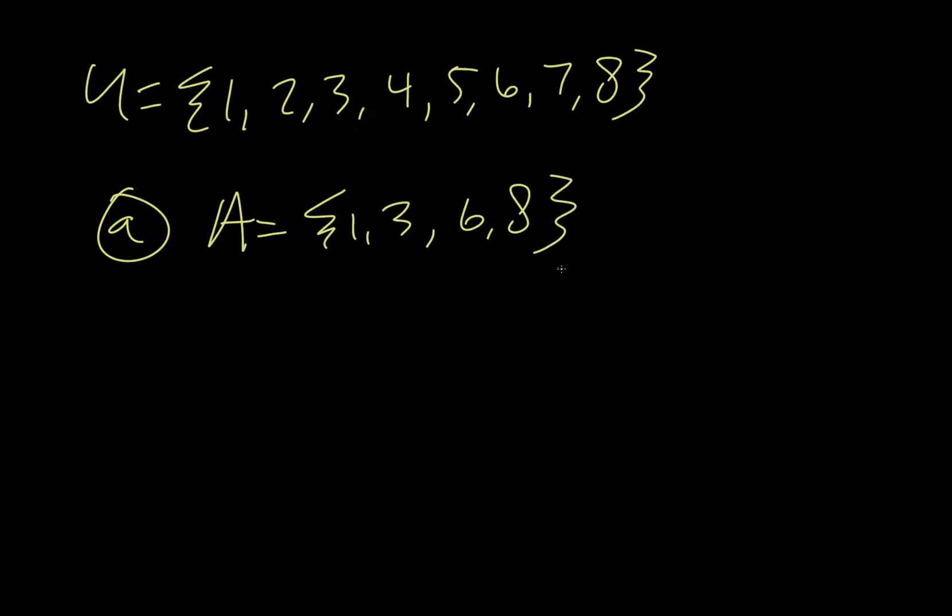So, they give us a universal set. That is one, two, three, four, five, six, seven, eight. And then it says illustrate on a Venn diagram the sets. So they give us part A. We're gonna say A is equal to one, three, six, eight. And B is equal to two, three, four, five, eight.